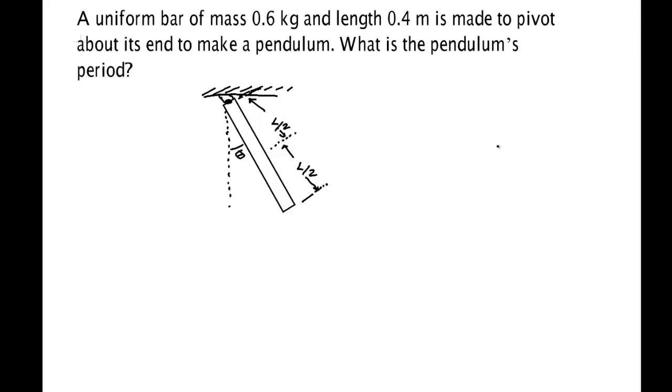In this video we're going to work another simple harmonic motion problem. It's a type of pendulum created by a uniform bar that's been attached on one end and allowed to swing due to gravity pulling at the center of mass.